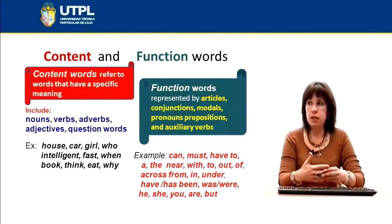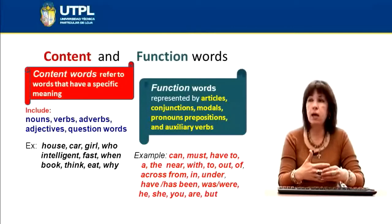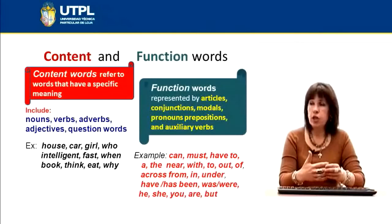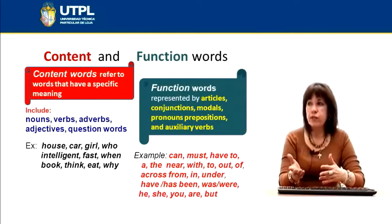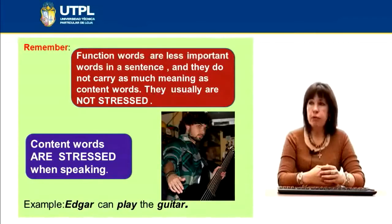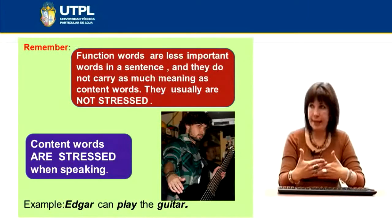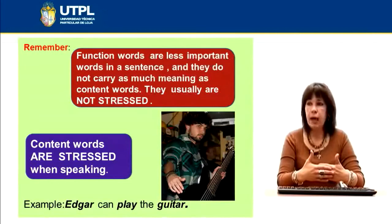Function words, as the name suggests, have a specific function within a sentence. They are represented by articles, conjunctions, modals, pronouns, prepositions, and auxiliary verbs. They are less important in conveying meaning and should not be emphasized as strongly as content words. Examples include 'can' (a modal), 'across from' (a preposition), and pronouns like 'he' and 'she.' To summarize: function words are less important, carry less meaning, and are not stressed.